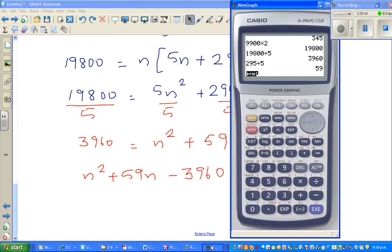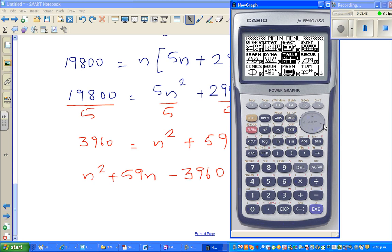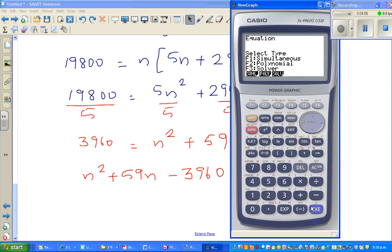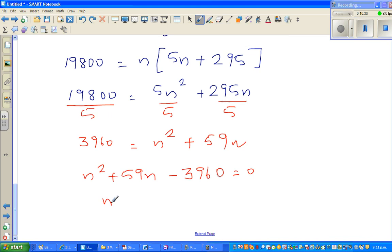You can use a calculator and go to menu. You can go to table equation, let's go to equation. This is polynomial, second degree. Your a is the coefficient of n which is 1. B is the coefficient of x which is n, so type in 59. C is the constant which is minus 3960. Then solve it. So it's 40 and minus 99, so n equals 40 or n equals minus 99.